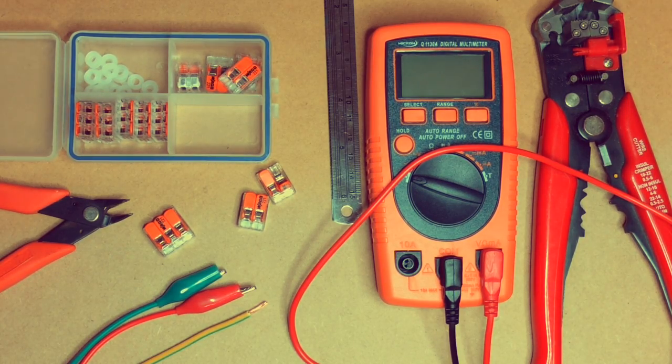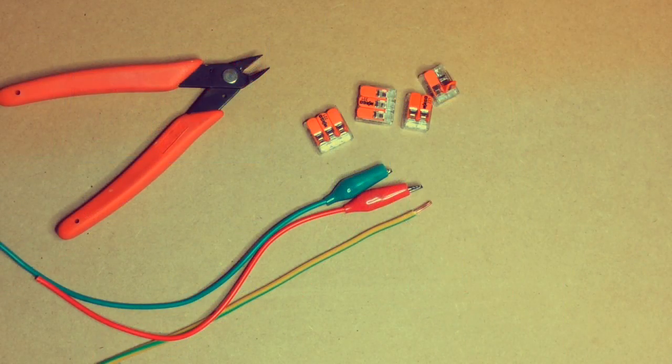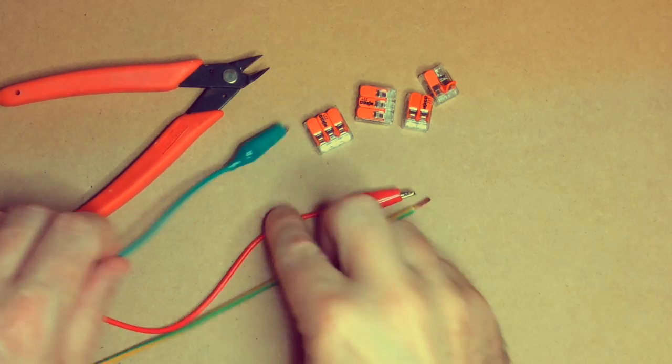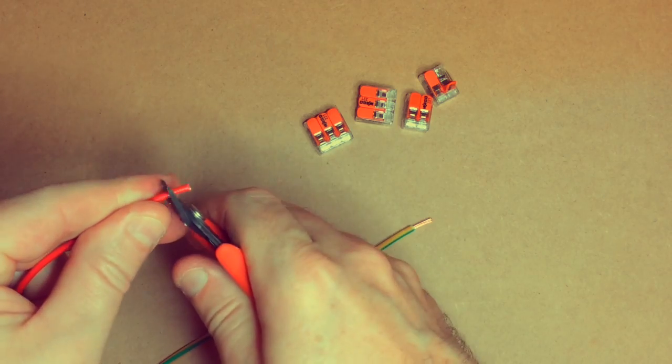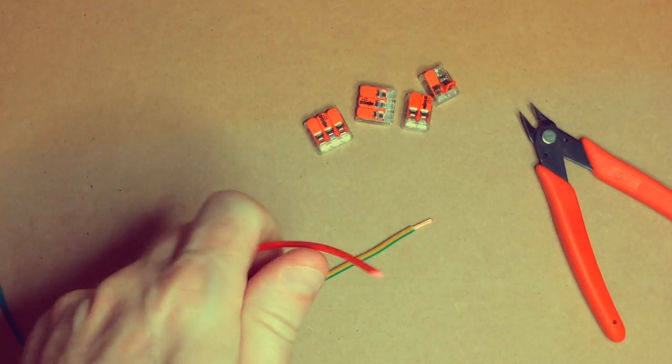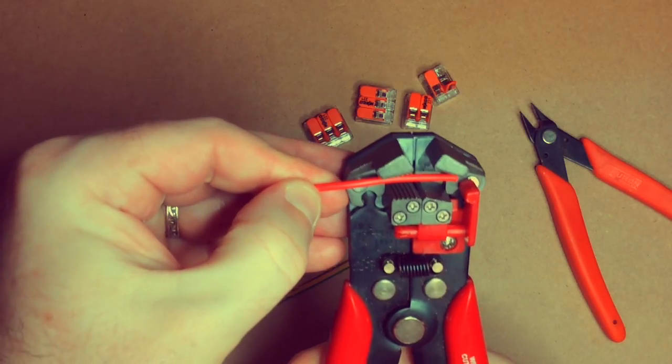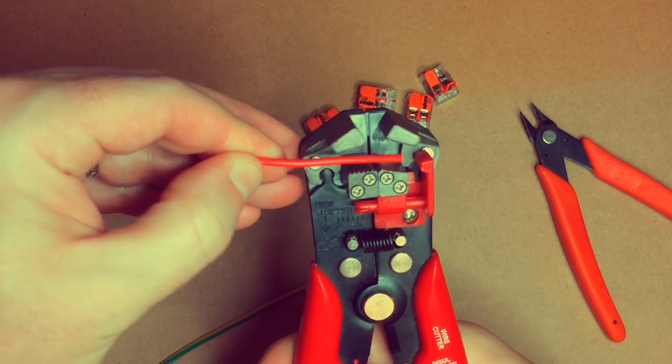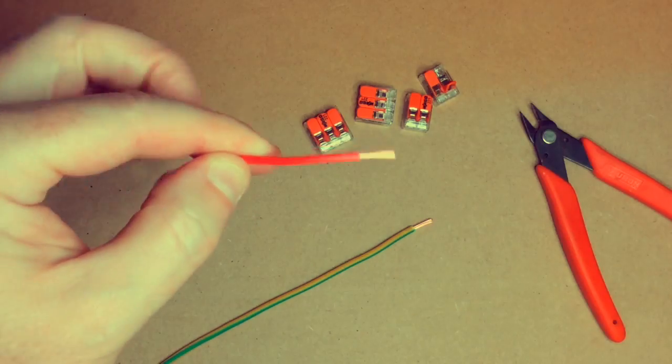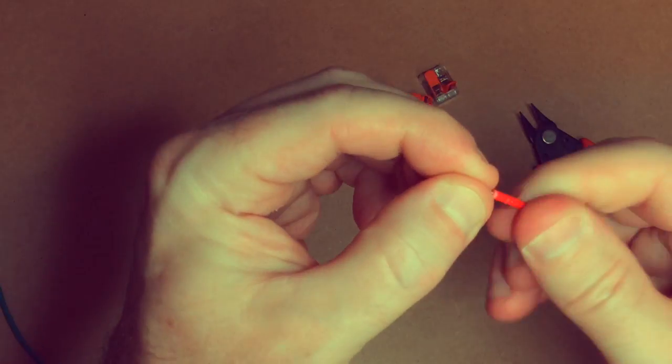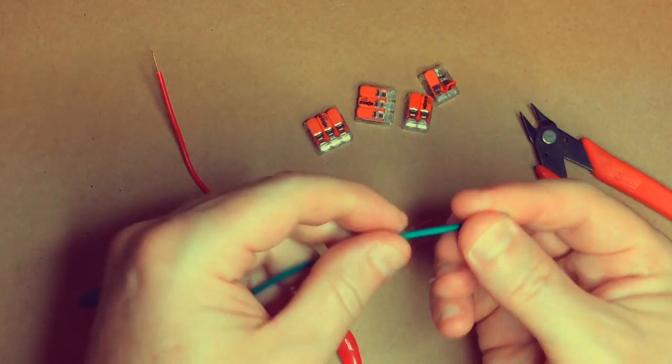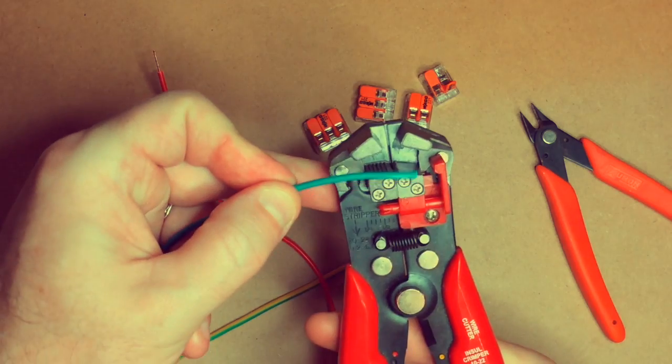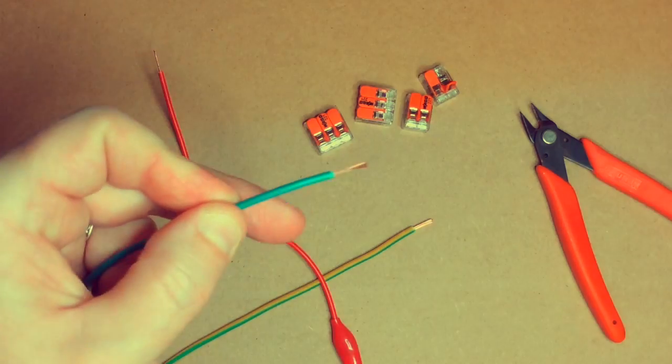To get started, let's get ourselves a test lead here, trim that to size like so, and then strip using the ratchet strippers. Twist up the wire there. Let's do the same on the green one. Place it in the stripper, strip, twist it together.